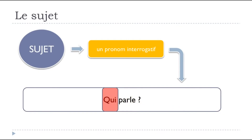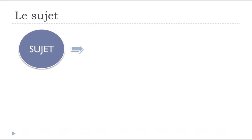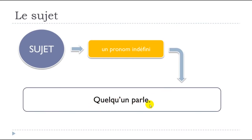The last one is un pronom indéfini — quite useful as well. Using the same verb parler, we have quelqu'un — someone, somebody. Quelqu'un parle — somebody is talking, someone is talking. You can see quite easily that quelqu'un is the subject of the sentence.